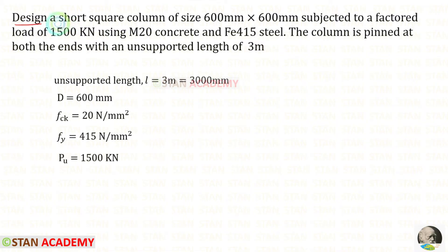Design a short square column of size 600 mm by 600 mm subjected to a factored load of 1500 kN using M20 concrete and Fe415 steel. The column is pinned at both ends with an unsupported length of 3 meters.